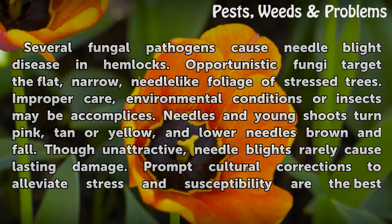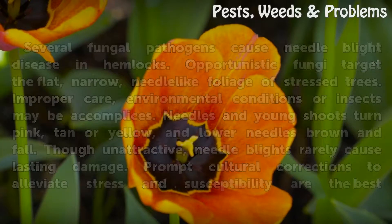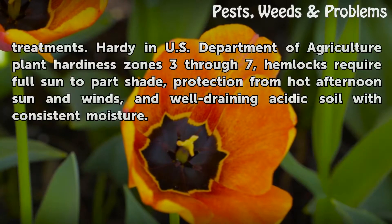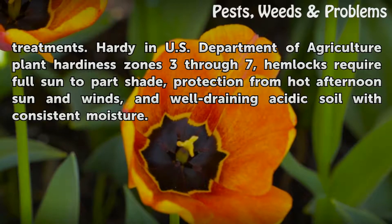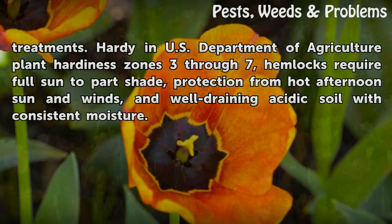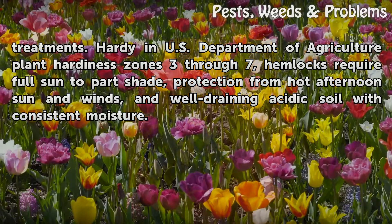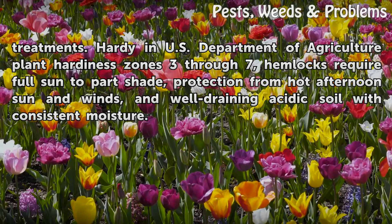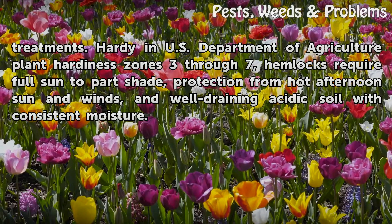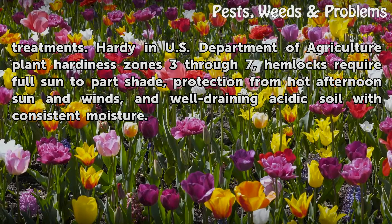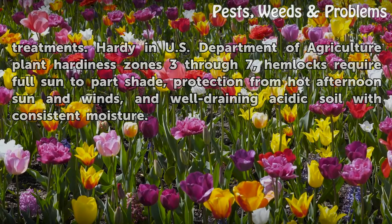Prompt cultural corrections to alleviate stress and susceptibility are the best treatments. Hardy in U.S. Department of Agriculture Plant Hardiness Zones 3–7, hemlocks require full sun to part shade, protection from hot afternoon sun and winds, and well-draining acidic soil with consistent moisture.